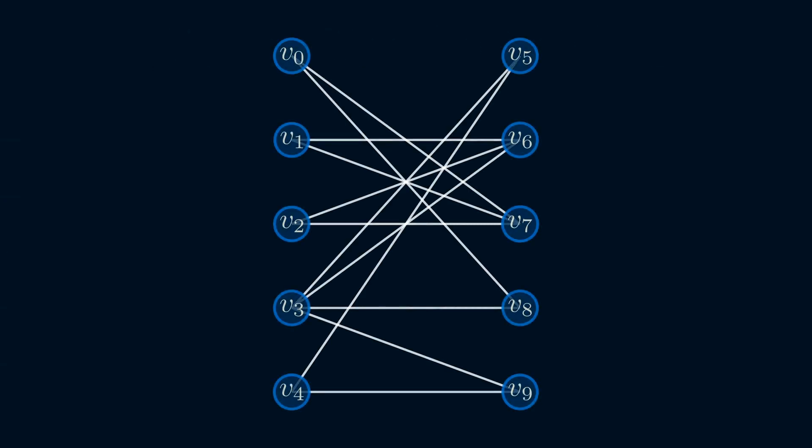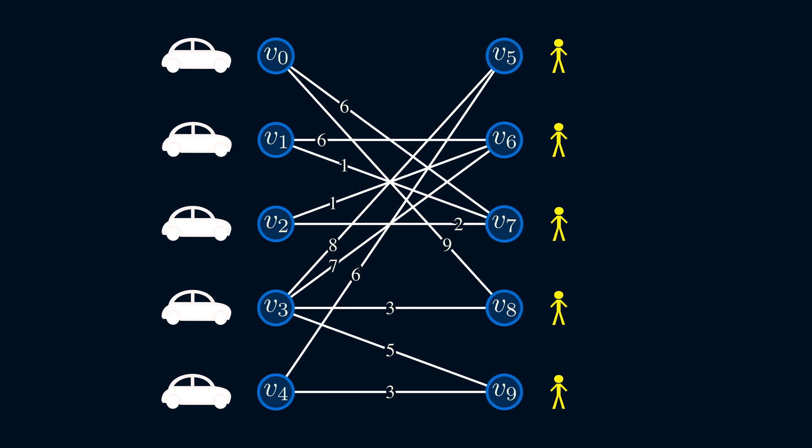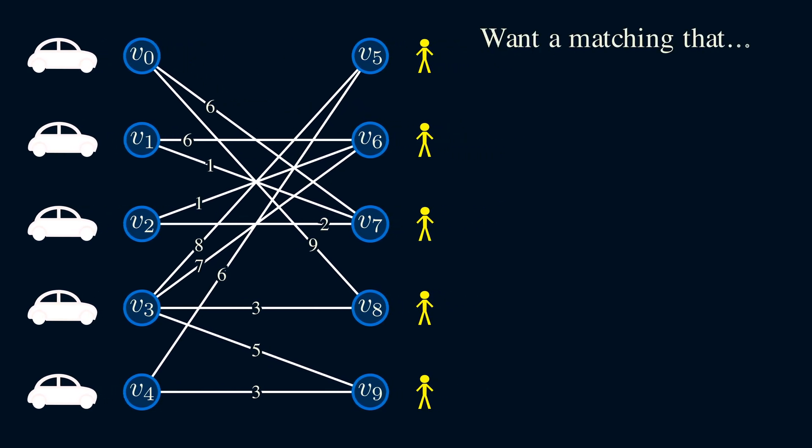We can model this problem mathematically as a graph. First, the objects we have are the cars and passengers. These are the nodes of the graph. The number on the edge will be the time it takes for the car to reach the person. Our goal then is to find an assignment that ensures two things. First, all of the people are assigned a car. And second, this assignment has the least total waiting time.